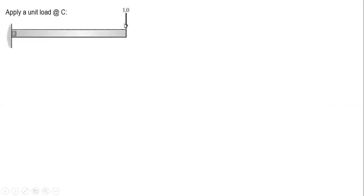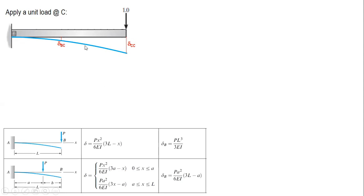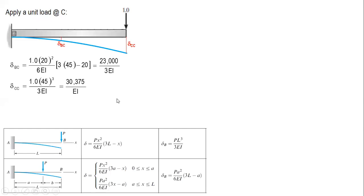For the second redundant RC, we apply a unit load at C. Delta_bc is the deflection of point B due to a unit load at C, and delta_cc is the deflection of point C due to a unit load at C. For delta_bc with x equals 20 and L equals 45, we get 23000 over 3EI. For delta_cc, which is deflection at the free end, we use PL-cubed over 3EI.